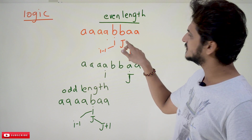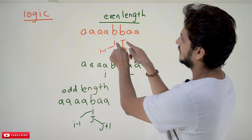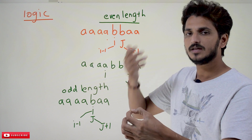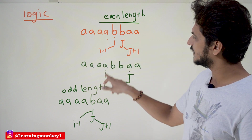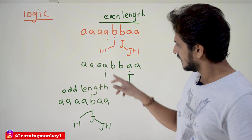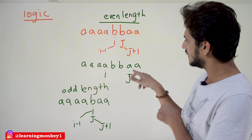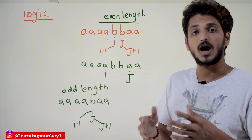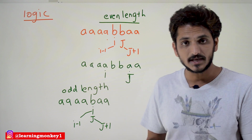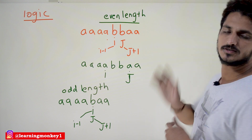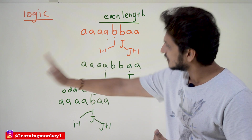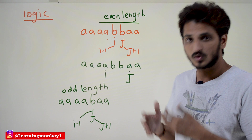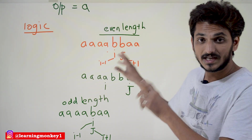We take two variables: i and j. For even length, i starts at some position and j is at i plus 1. Check if the elements at positions i and j are equal. If they are equal, decrement i and increment j (i minus 1, j plus 1). Keep doing this until the elements don't match, or j crosses above the length of the string, or i goes below 0. This logic identifies even length palindromic strings.